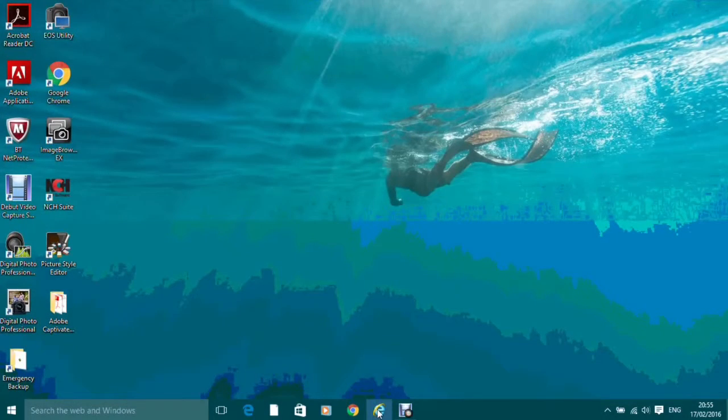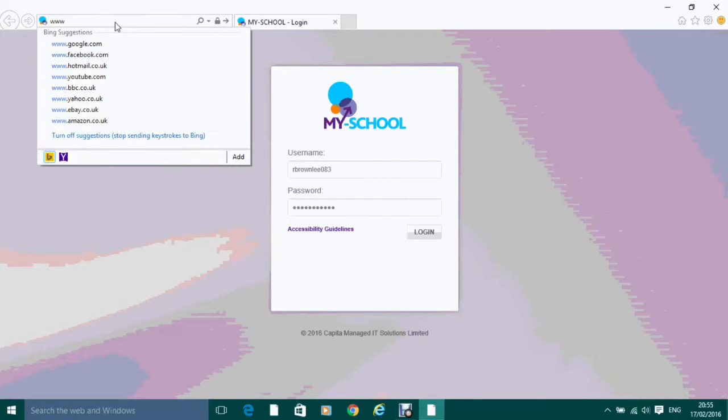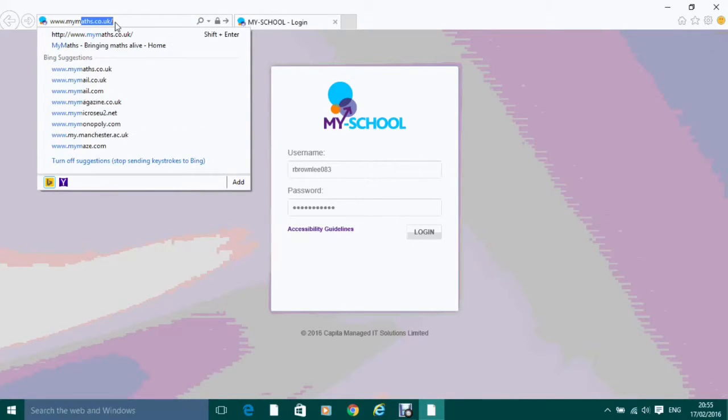To access MyMaths, log into your internet browser and type in the web address www.mymaths.co.uk. Make sure you type in this address exactly, as there are other versions of the MyMaths website available for other countries.